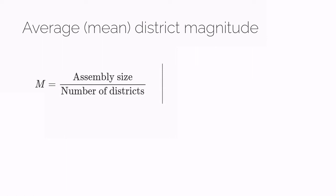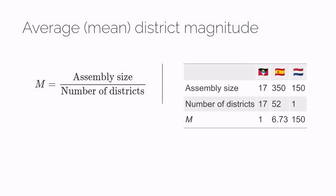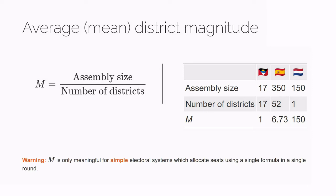Our three examples have very different average district magnitudes, and that affects how their electoral systems work. District magnitude matters because the larger the district magnitude, the easier it is to divide seats proportionally.